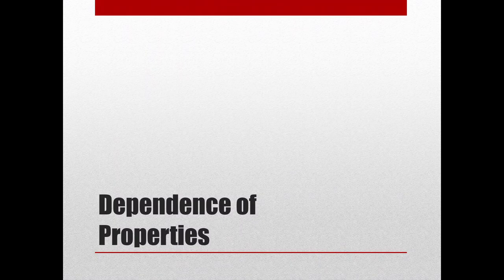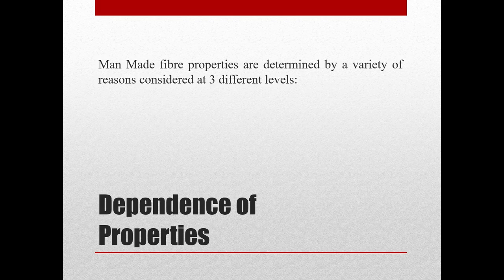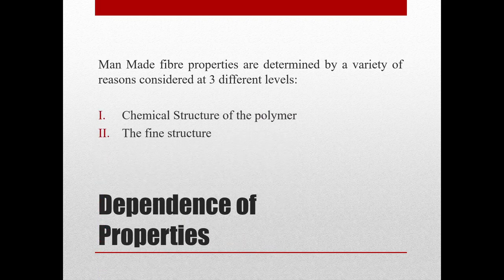What are the factors that decide the properties of any particular fiber? Man-made fiber properties are determined by a variety of reasons considered at three different levels, broadly subclassified as: the chemical structure of the polymer itself, the fine structure, and the gross morphology. We shall see what each of these means one by one.